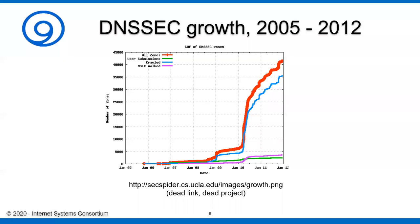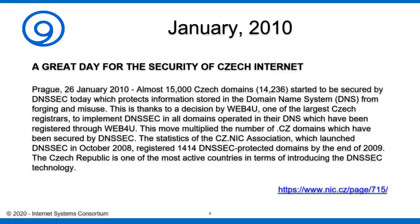You'll notice that in January of 2010 there's a tremendous, nearly vertical spike that really boosted DNSSEC. That was done by the Czech Republic — by CZ.NIC — and it was done in January of 2010 overnight. They signed 14,236 zones, done by one of the registrars, Web4U, who one night decided to sign all of the zones registered through them — and they did it.